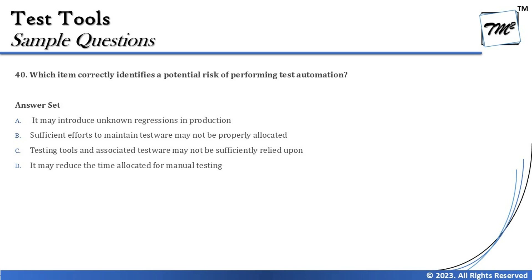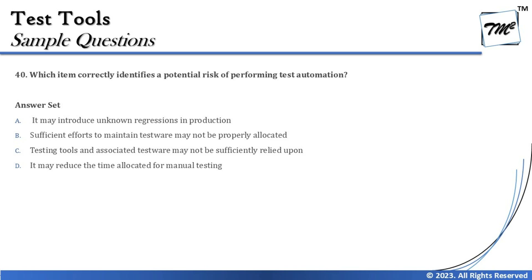Option B says: sufficient efforts to maintain testware may not be properly allocated. When introducing a new tool in an organization, people must be aware of what artifacts it needs, what assets it generates, and what reports it produces — and someone must manage and maintain these throughout the lifecycle. If this doesn't happen, it becomes a real risk of using the tool. Option B looks good.